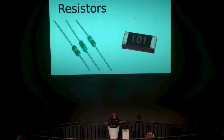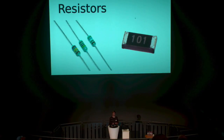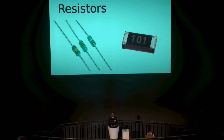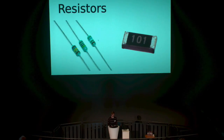We're going to go through all the different components. If you don't know anything about electronics, we won't talk too much about theory — just go through what these components look like so you can identify them. These are resistors. For all components, you get through-hole components with legs that go through the board, and you get surface mount components which are much smaller — tiny components that sit on top of your PCB when you solder them and don't go through.